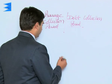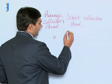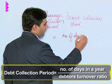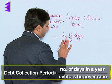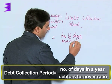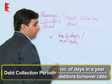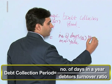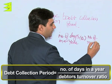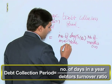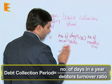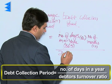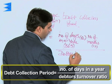This can be calculated as number of days in a year — 365 for non-leap years — divided by debtors turnover ratio. In case it is being calculated in months, that would be 12 divided by debtors turnover ratio.